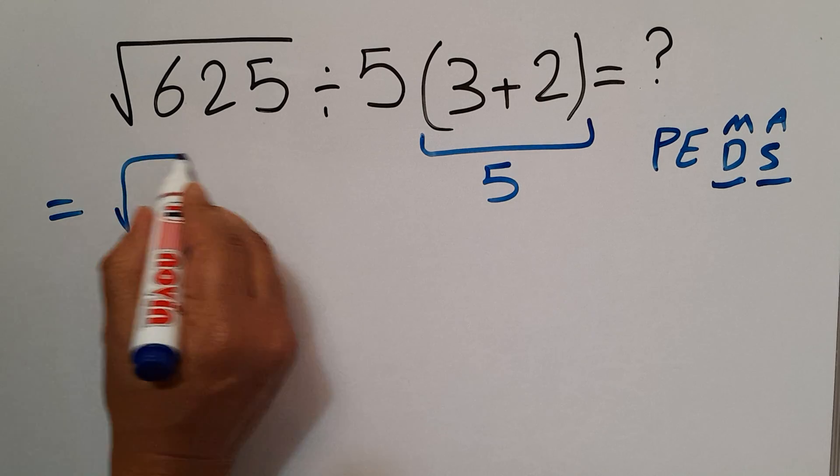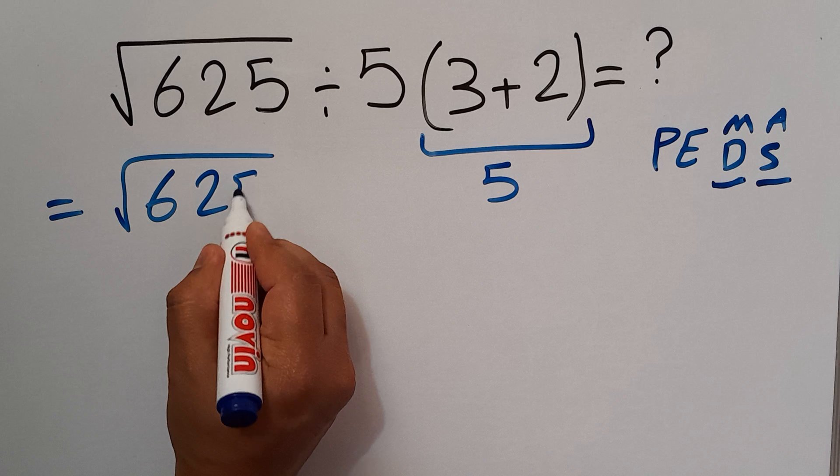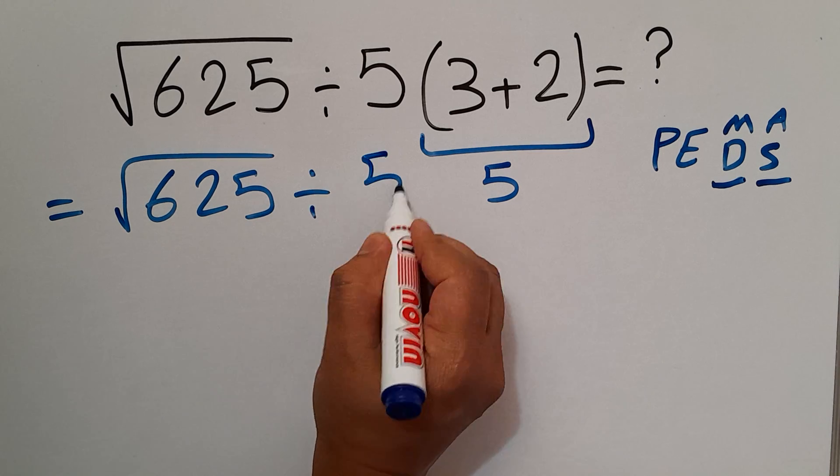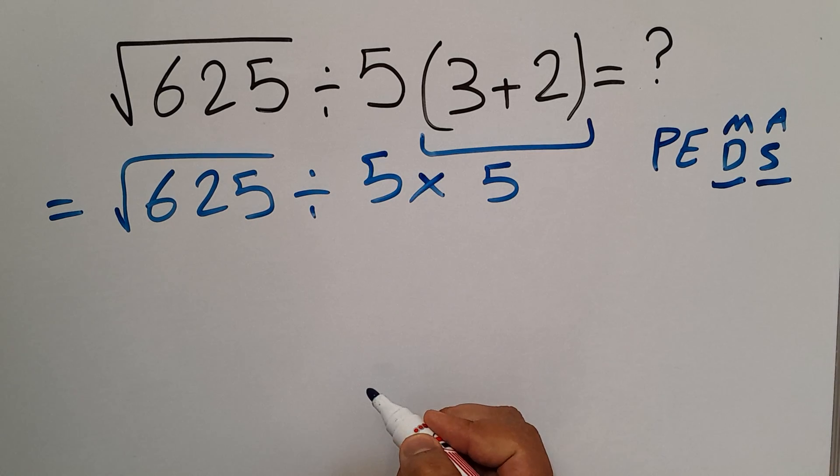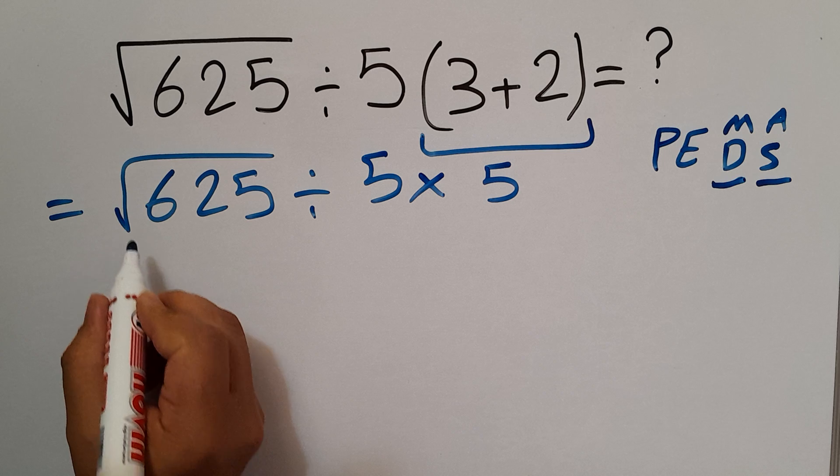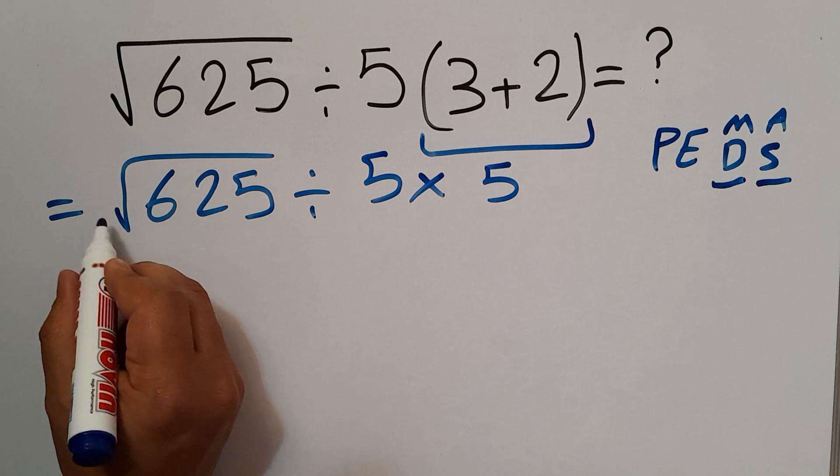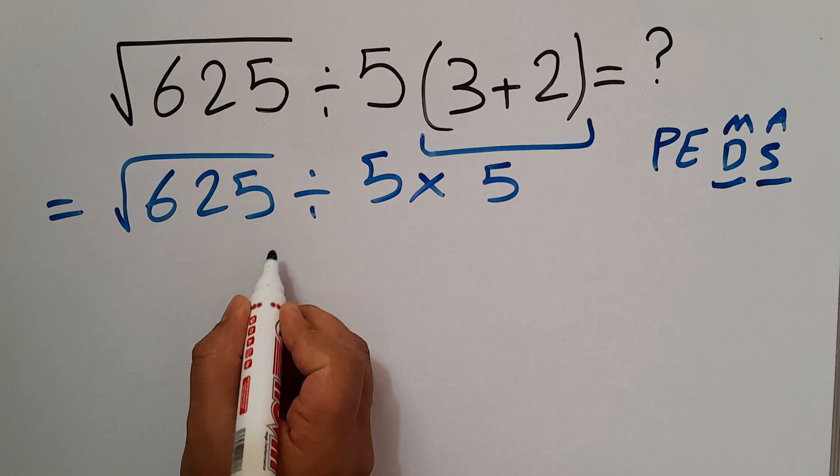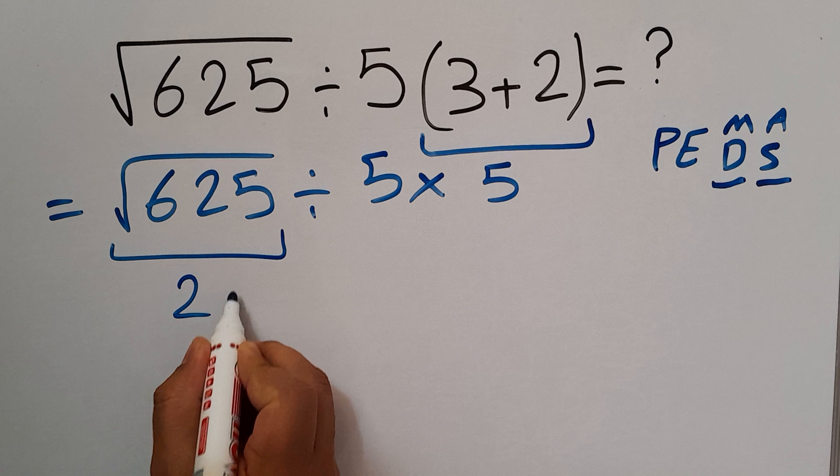So we have the square root of 625 divided by 5 times 5. And now we have to handle this exponent, square root of 625, which equals 25.